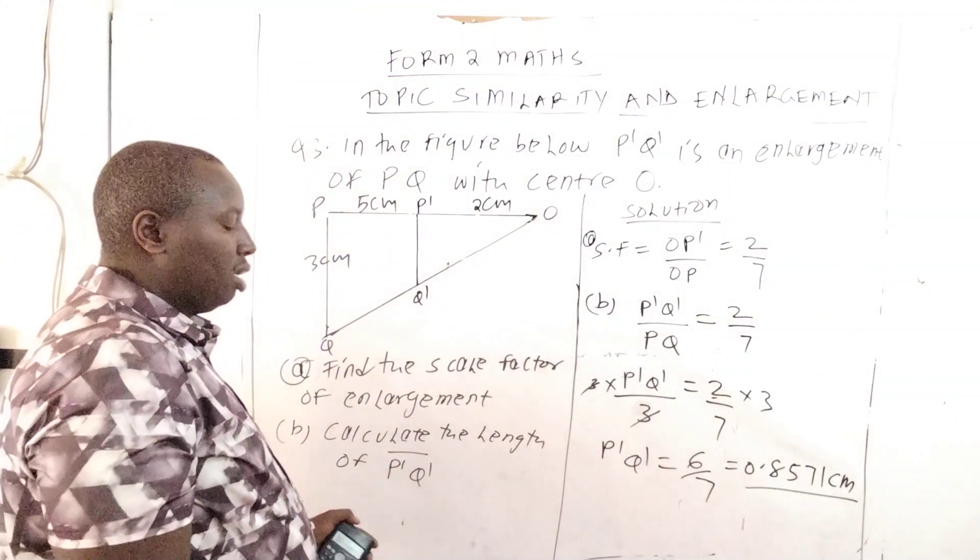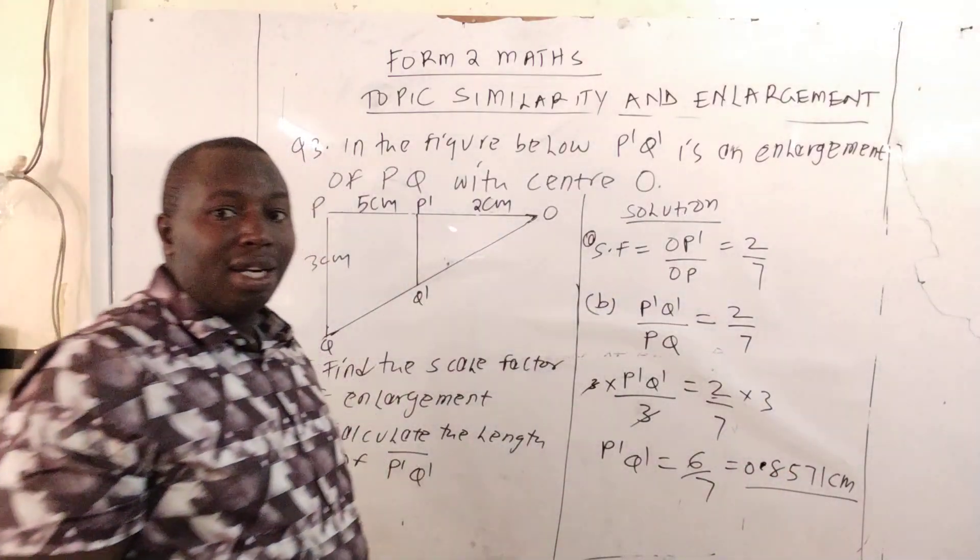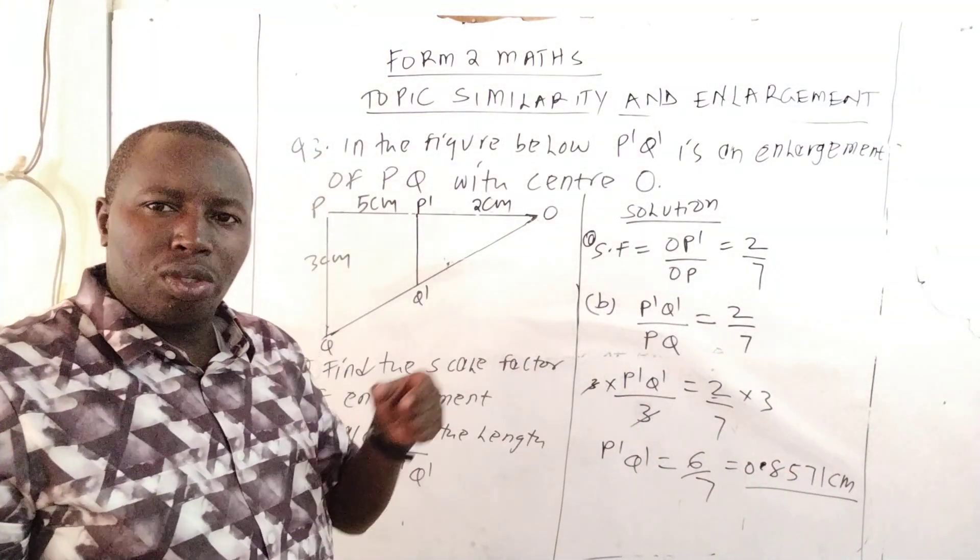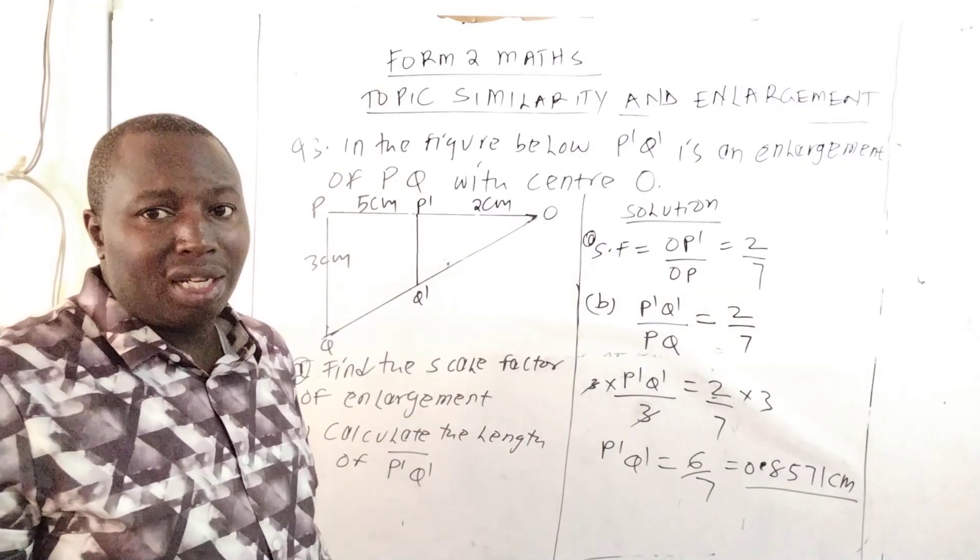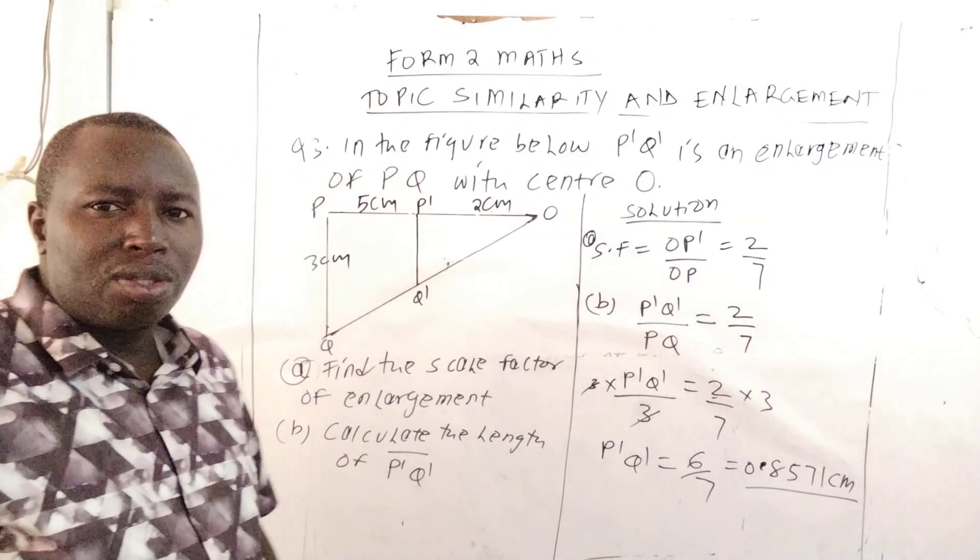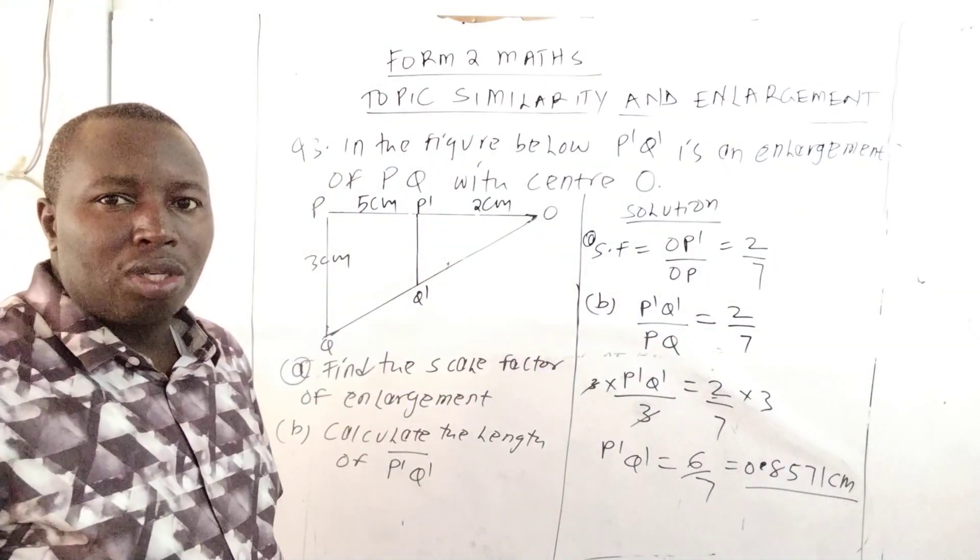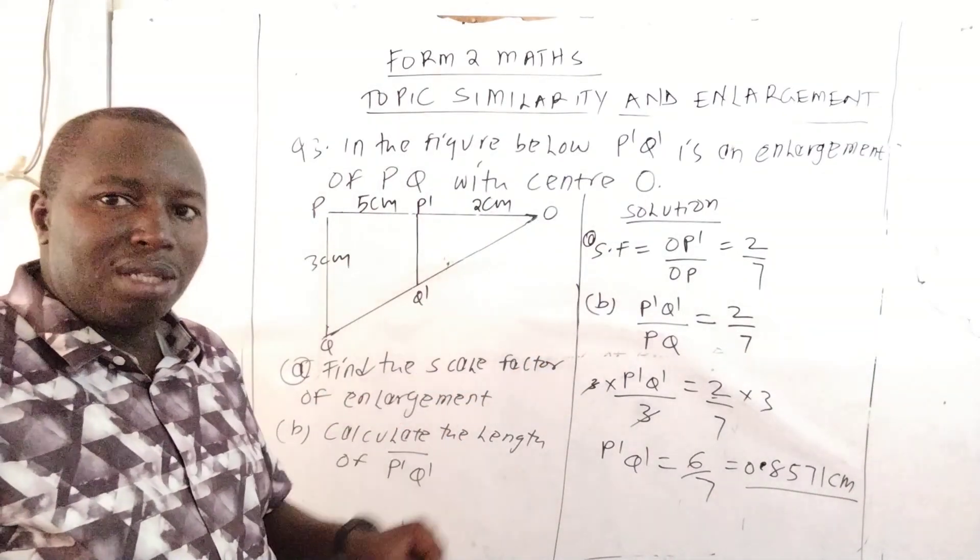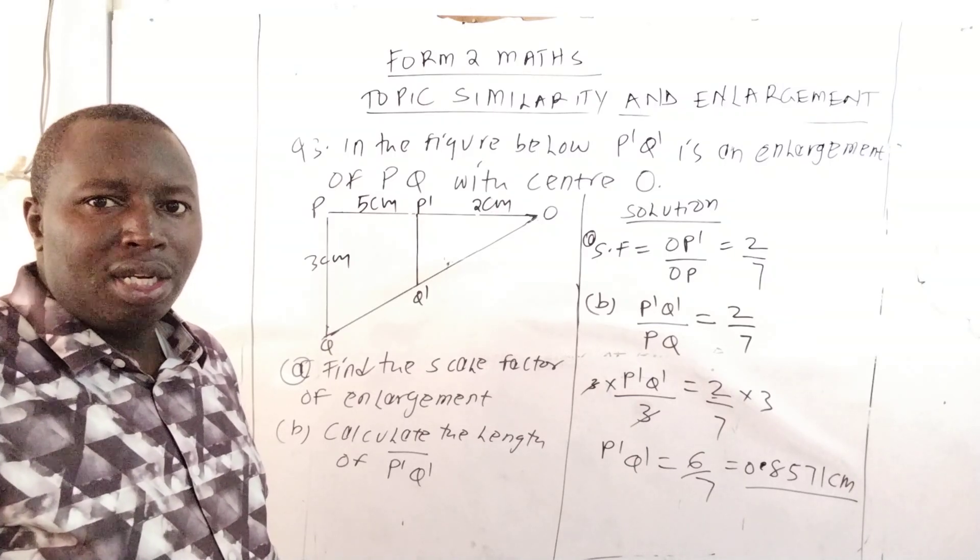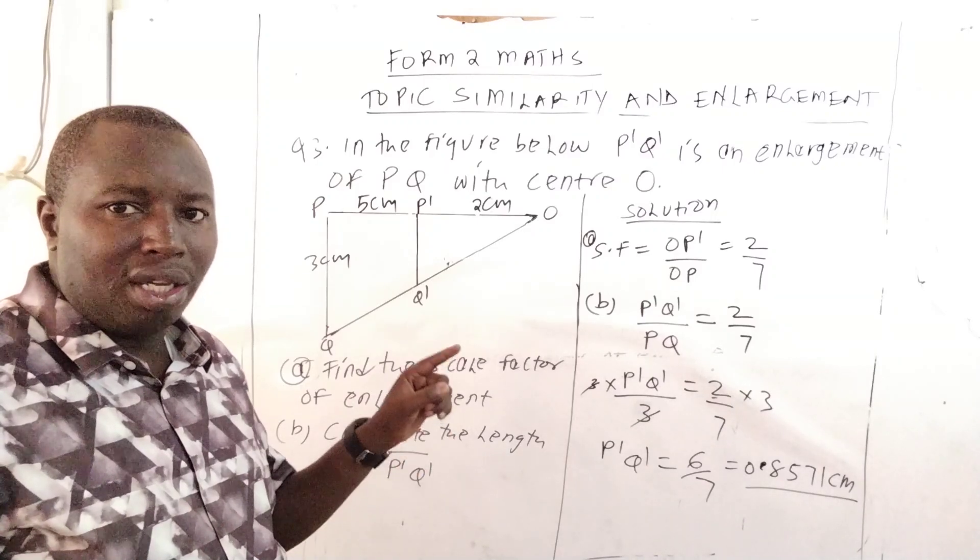So that is how you do that kind of question when you want to get the scale factor of enlargement. This is a Form 2 question on the topic similarity and enlargement. That is how you find the scale factor of enlargement and how you find the length of P1Q1.